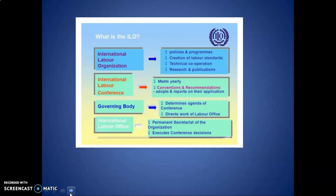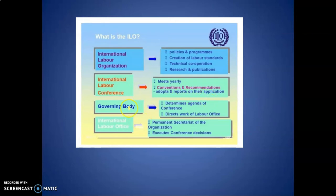The ILO is composed of three bodies: the International Labour Conference, the Governing Body, and the International Labour Office. The International Labour Conference meets yearly and works on making conventions and recommendations. The Governing Body determines the agenda of the conference and directs the work of the Labour Office. The International Labour Office is the permanent secretariat that executes all conference decisions.